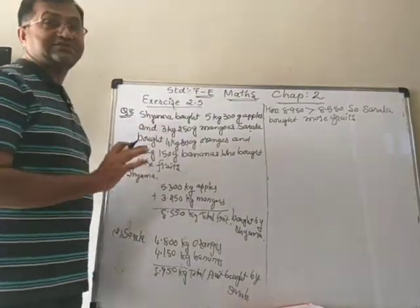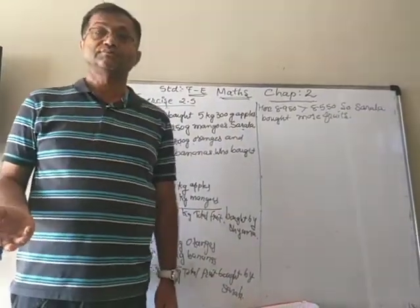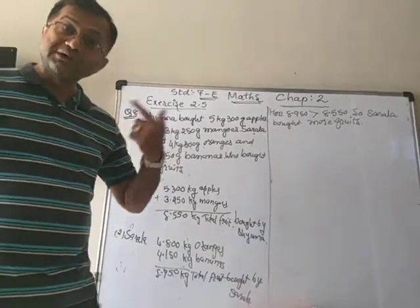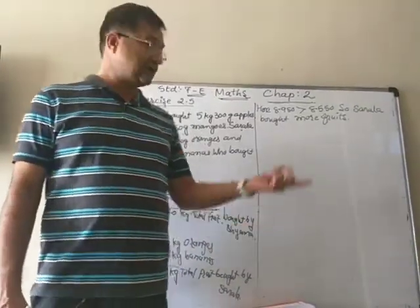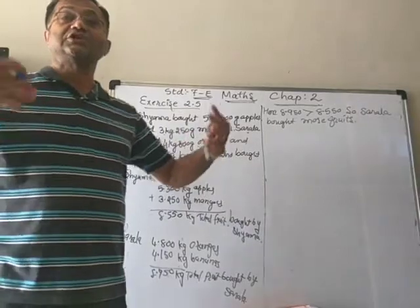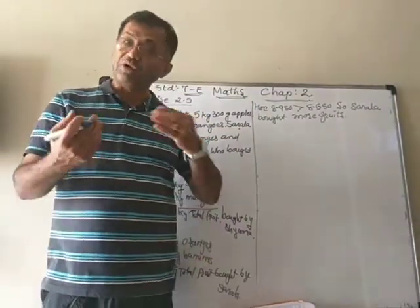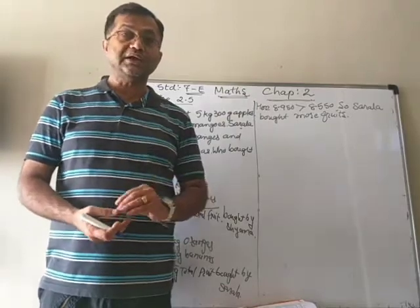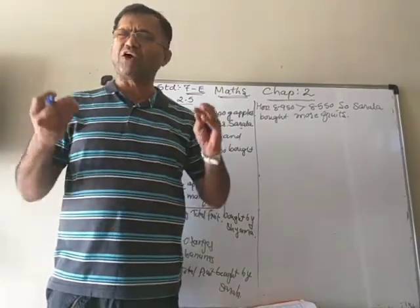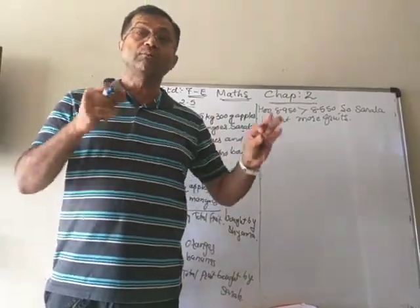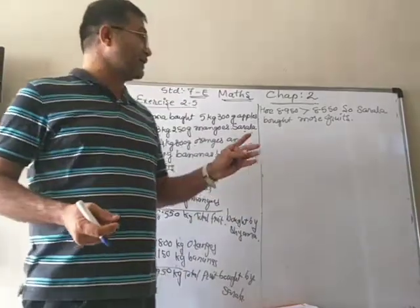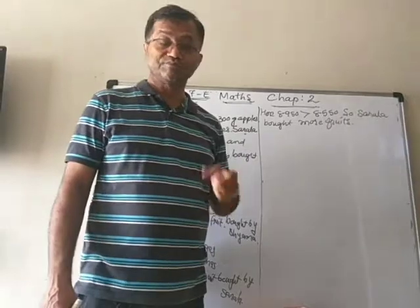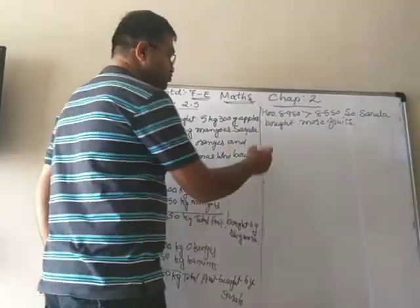Here they didn't ask how much more, so we don't have to subtract. If the question asked how much more — like in the previous sum — then we would subtract the smaller from the greater. But here we only need to identify who bought more fruits, so our answer is: Sarala bought more fruits.